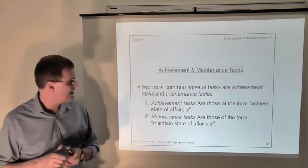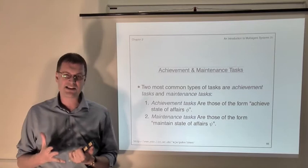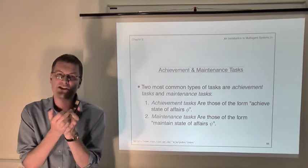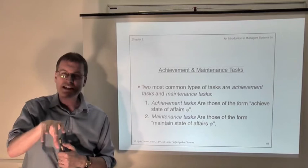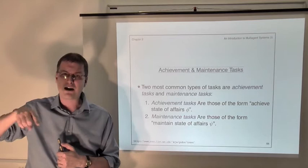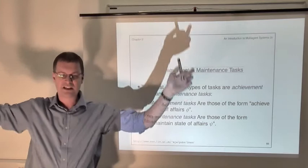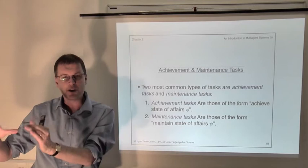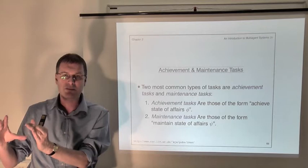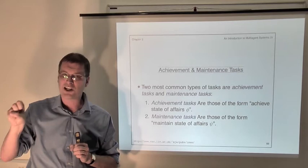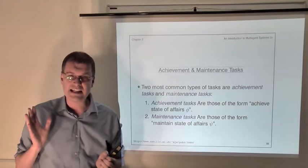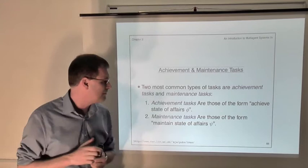Finally, we can look at two special cases of predicate task specifications called achievement and maintenance tasks. With achievement tasks, we give our agent a set of good states or goal states, and we're saying: I don't care what you do, just behave in such a way that you're guaranteed to produce one of these goal states on every run you could possibly generate. We identify some subset of all possible environment states — the good states, the goal states — and what you're saying to your agent is just behave in such a way that every run you generate contains at least one good state. We're not concerned about distinguishing between these good states; they're all equally good, we just want at least one of them to result.